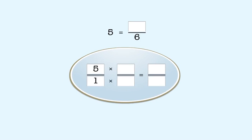Last one. We'll write the whole number 5 as a fraction with a denominator of 6. We start by writing 5 as a fraction over 1. Next, we multiply both numerator and denominator by 6.